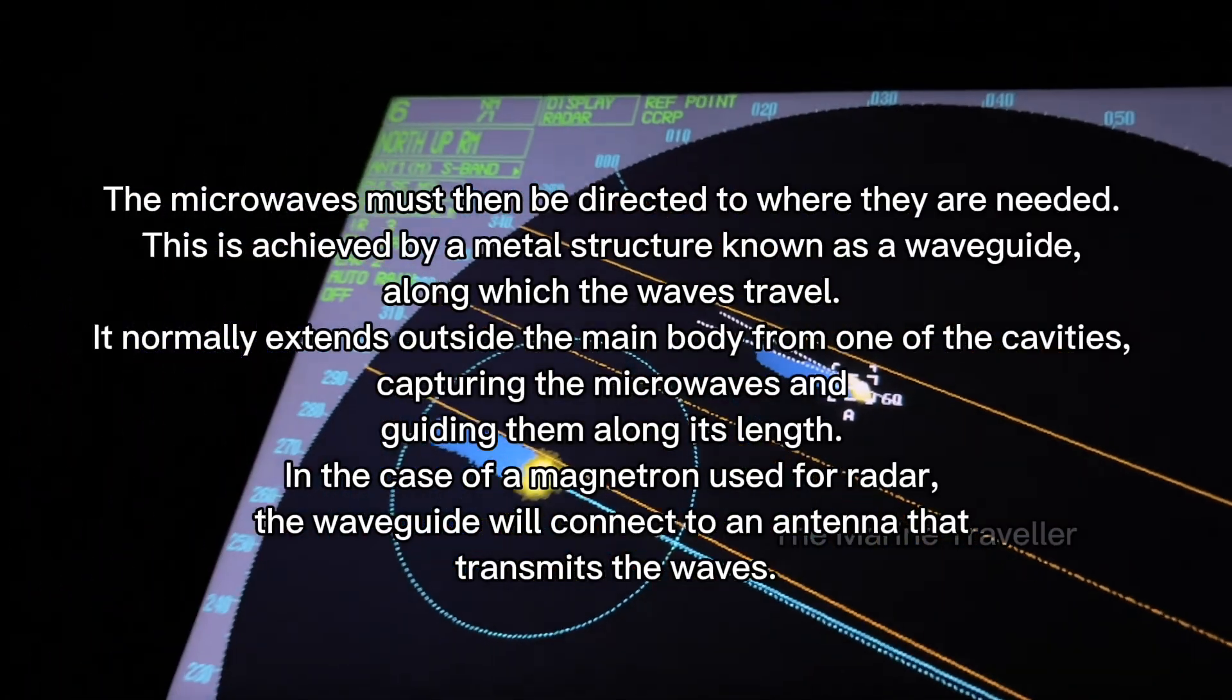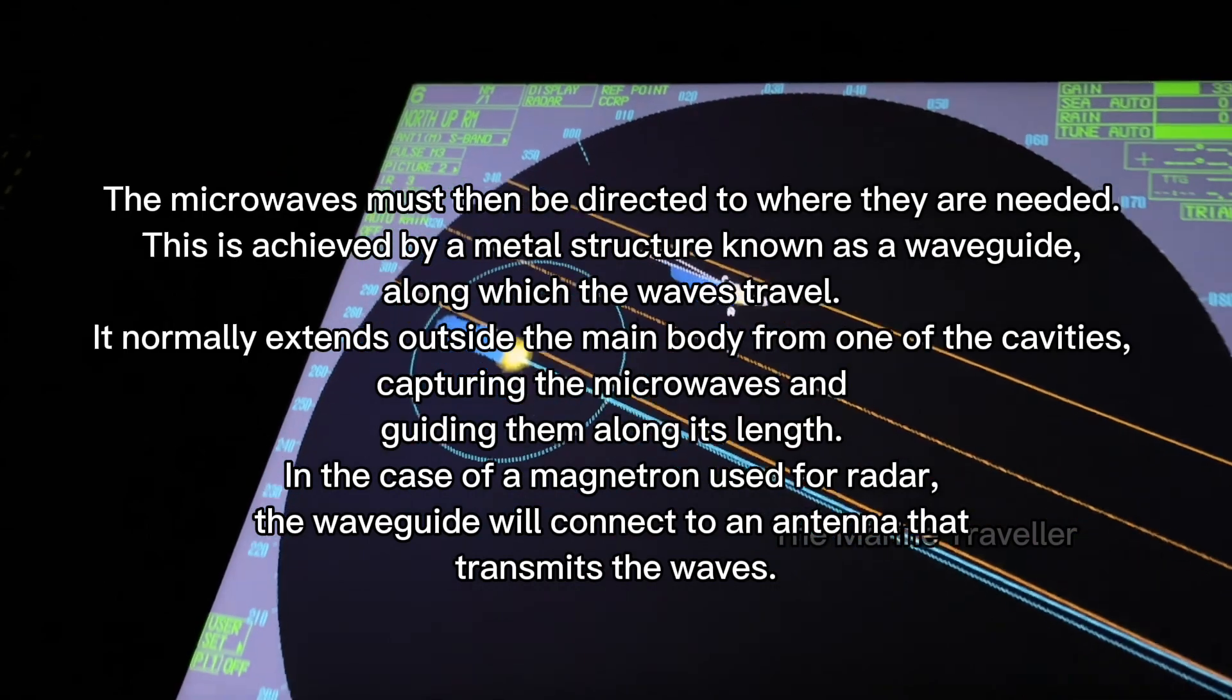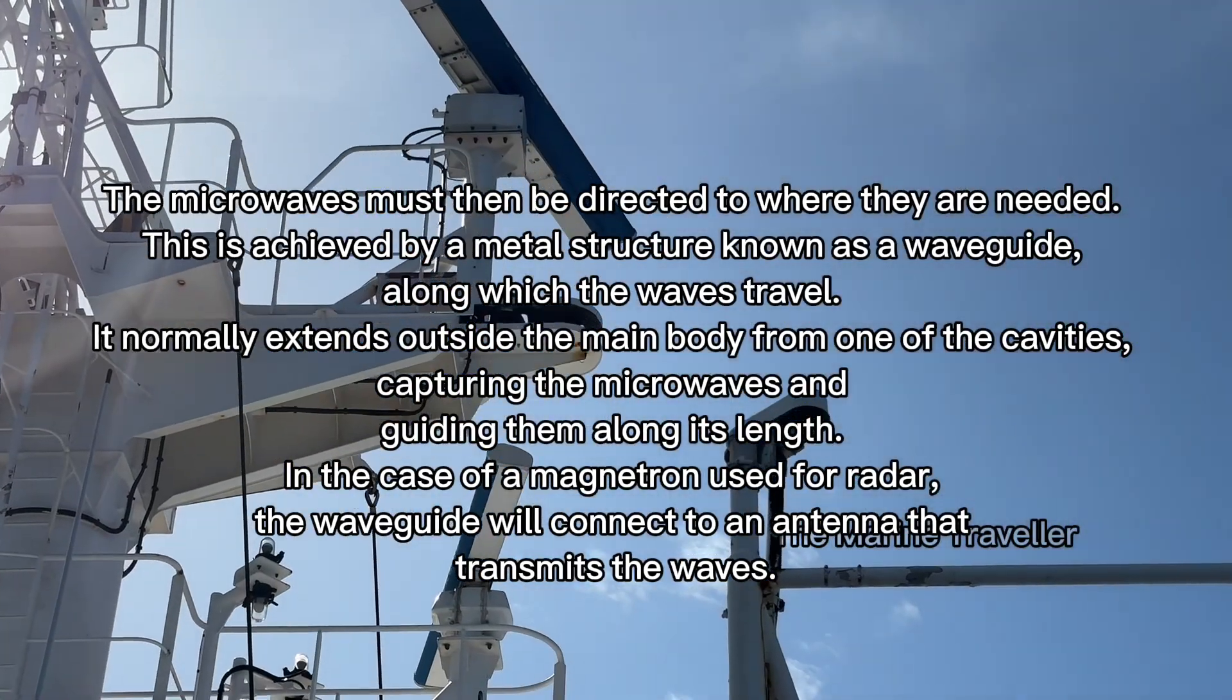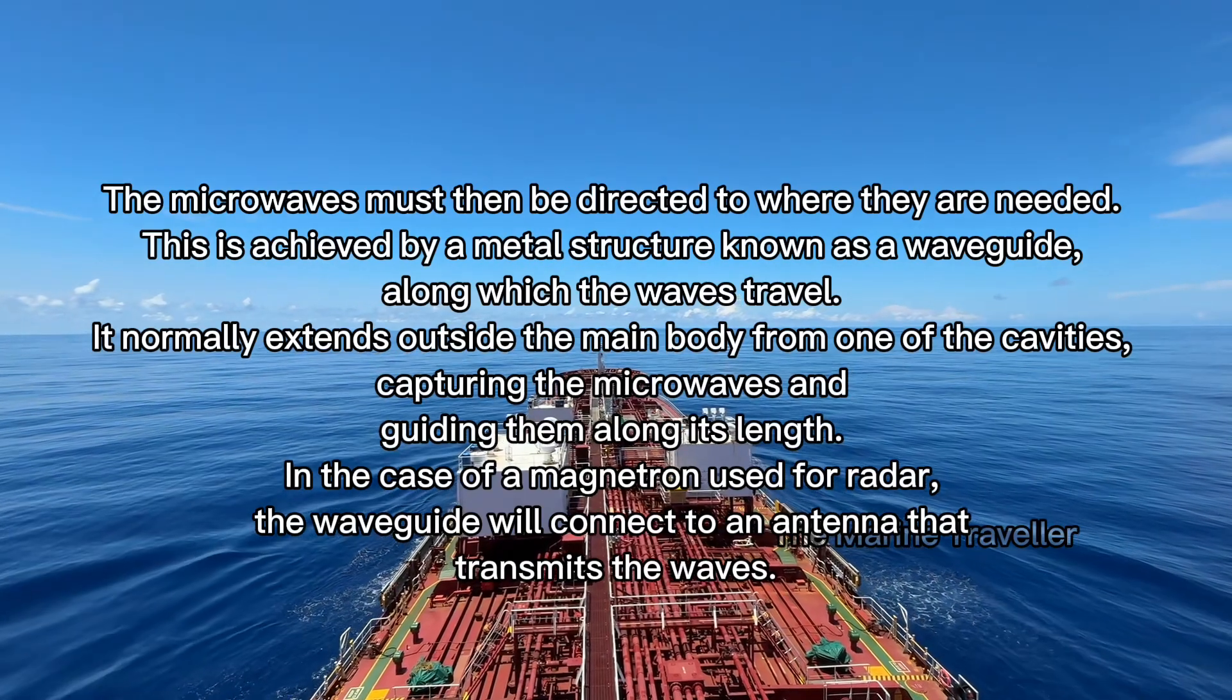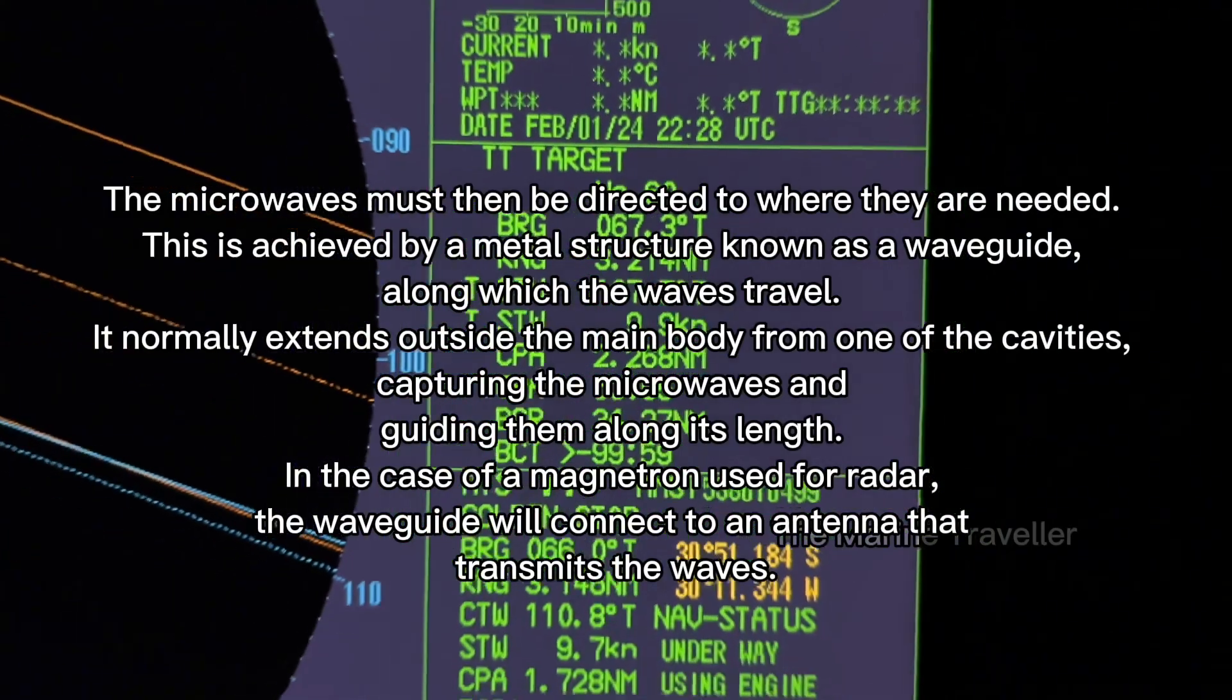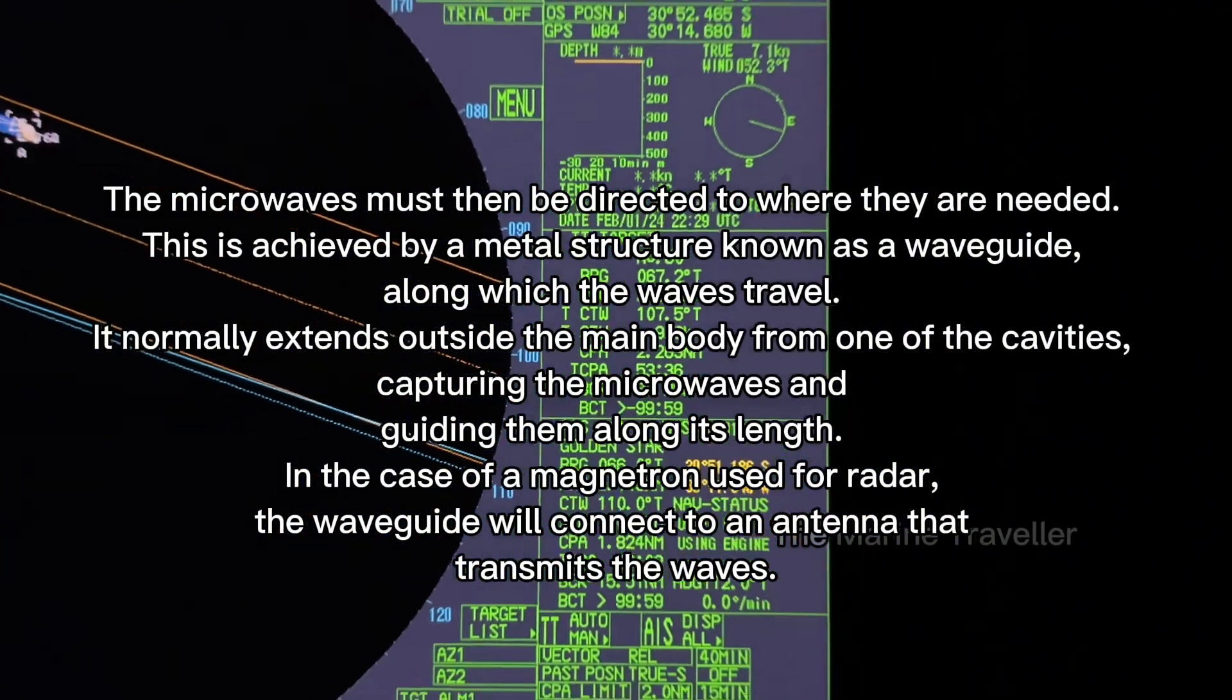The microwaves must then be directed to where they are needed. This is achieved by a metal structure known as a waveguide, along which the waves travel. It normally extends outside the main body from one of the cavities, capturing the microwaves and guiding them along its length.